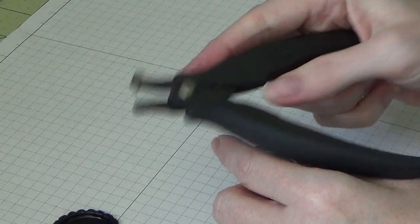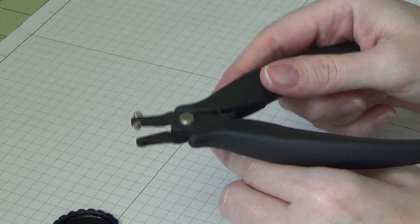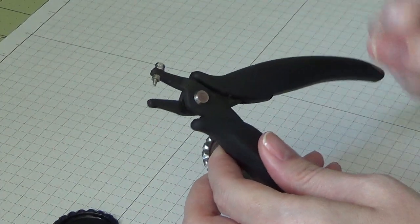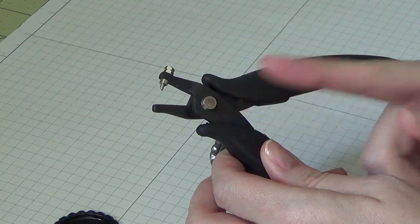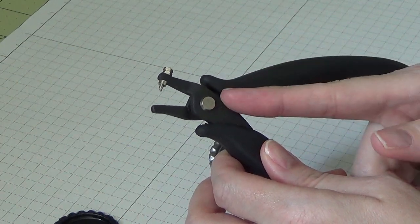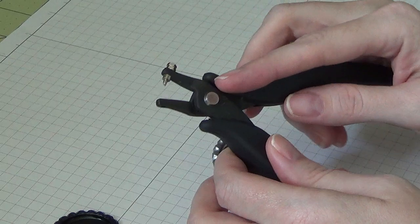So this little tool actually came with my kit, and I believe you can purchase it separately. I'm not 100% sure—I've never really looked for one since this came in my kit. But this is how I punch my holes.